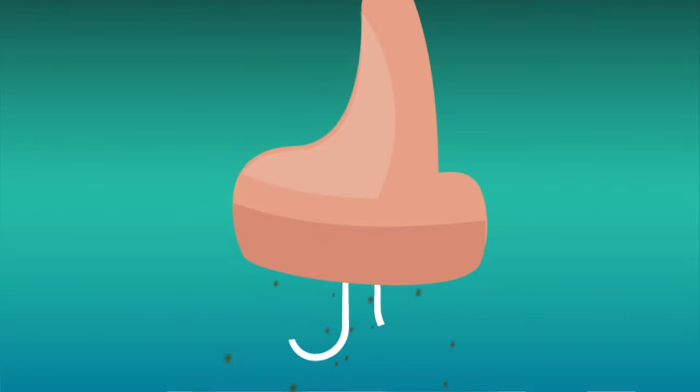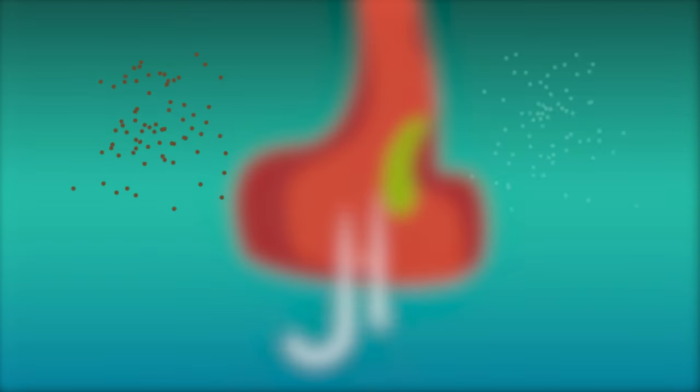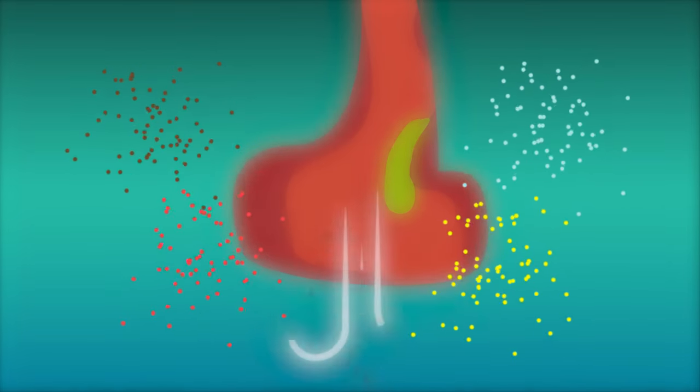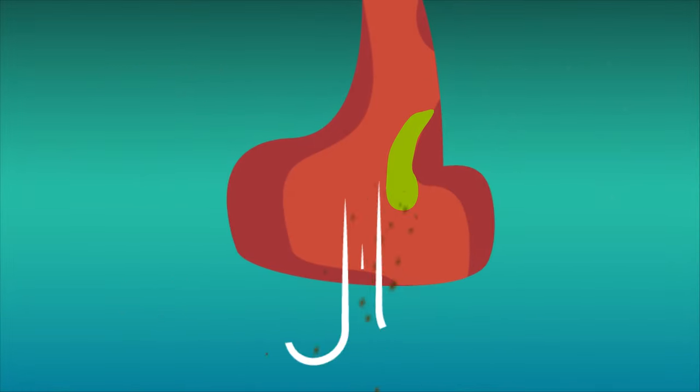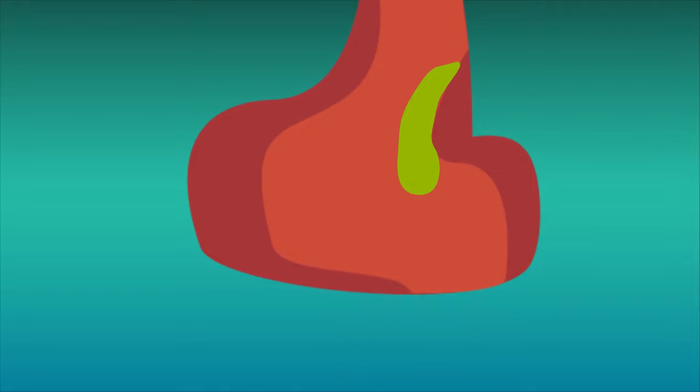Every time you breathe in, the air entering your nose is full of tiny particles that you don't want inside your lungs. Dust, dirt, germs, chemicals, and pollen, to name a few. So the snot acts as the first line of defense and traps as much of the bad stuff as it can, keeping your lungs and airways clean and clear.